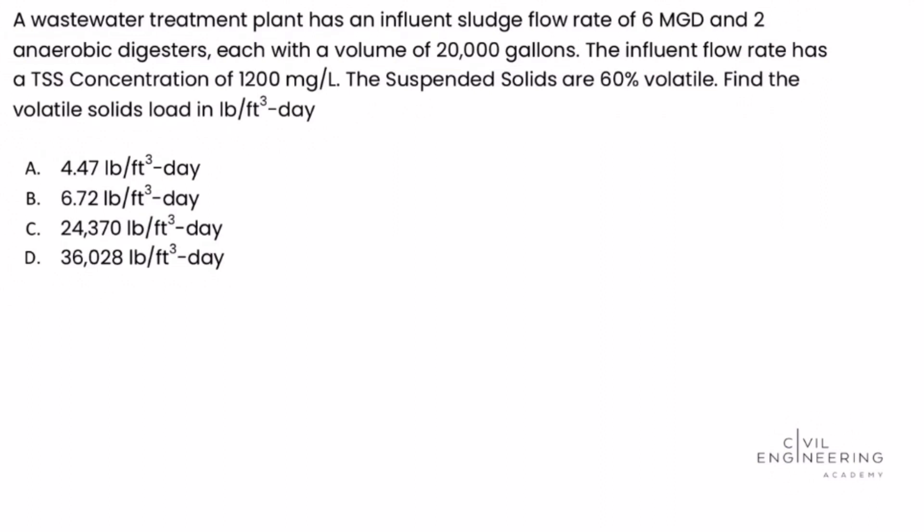A wastewater treatment plant has an influent sludge flow rate of 6 million gallons per day and two anaerobic digesters, each with a volume of 20,000 gallons. The influent flow rate has a total suspended solids concentration of 1,200 milligrams per liter. The suspended solids are 60% volatile. Find the volatile solids load in pounds per foot cubed day.